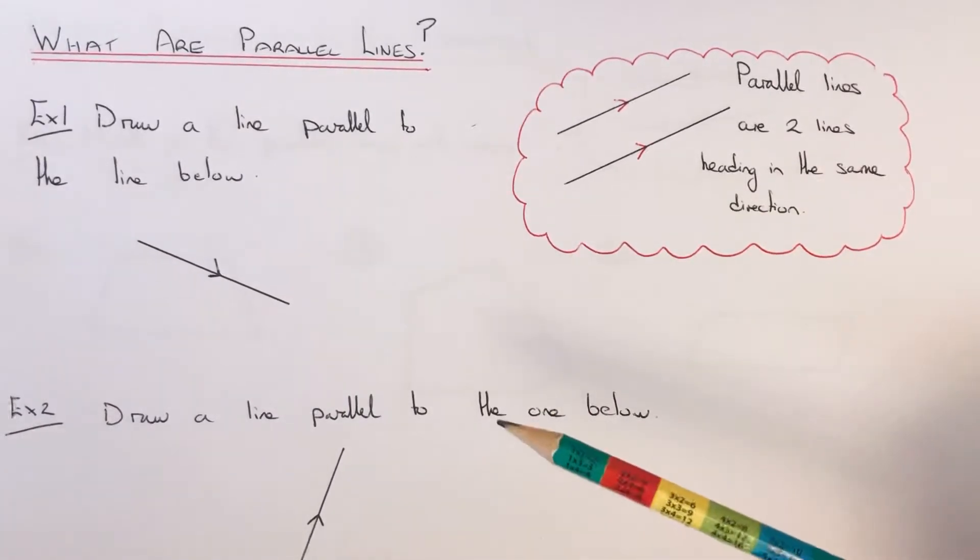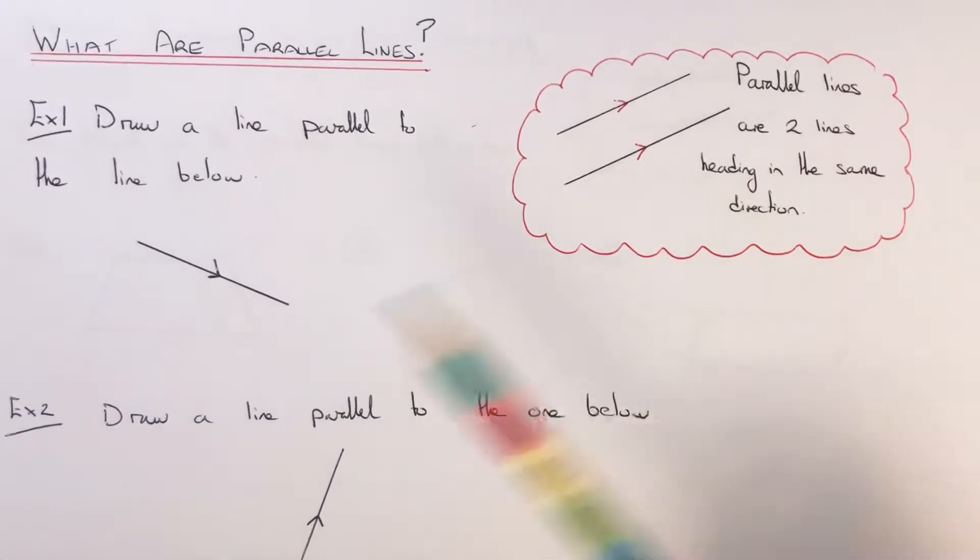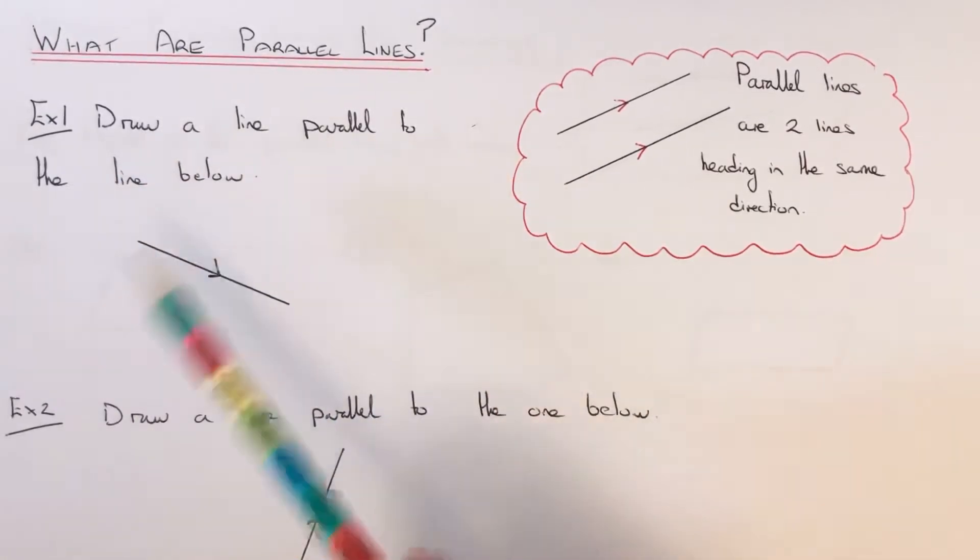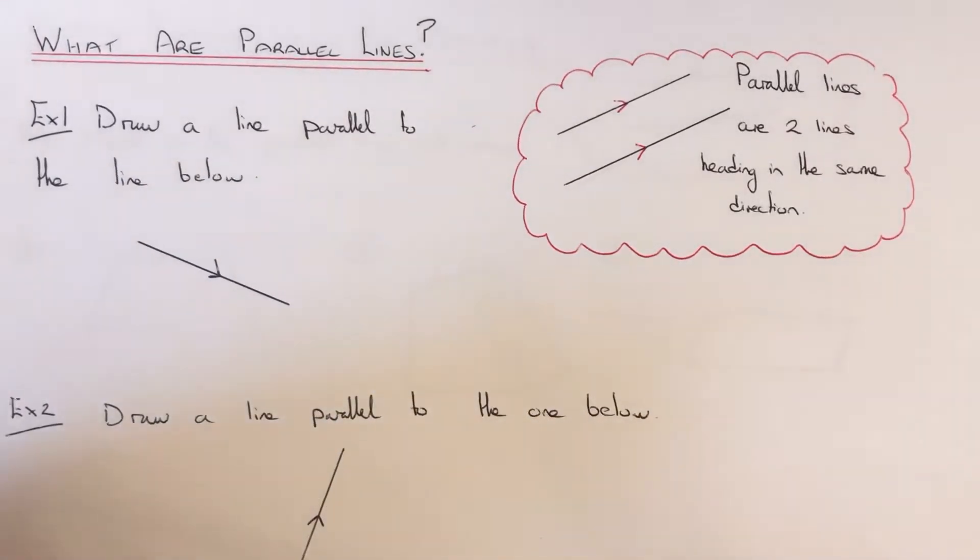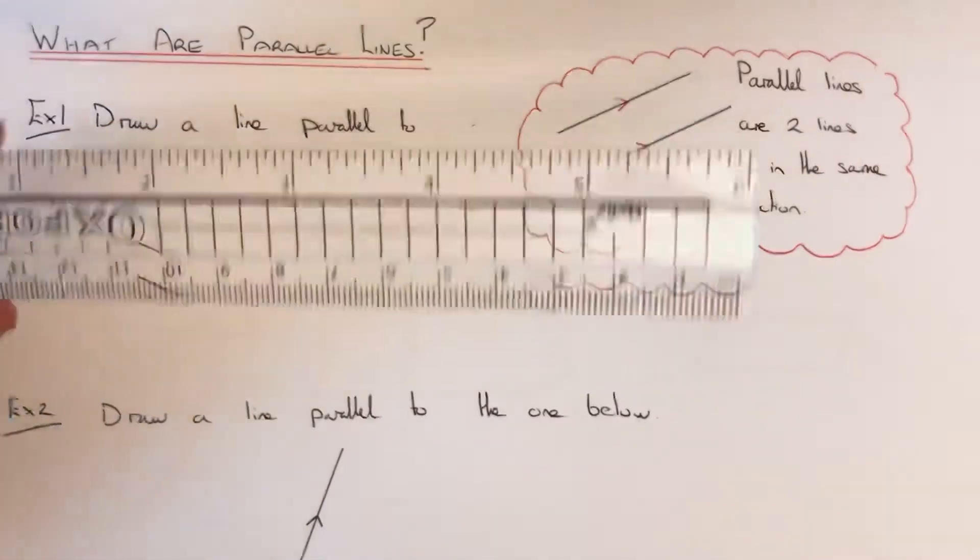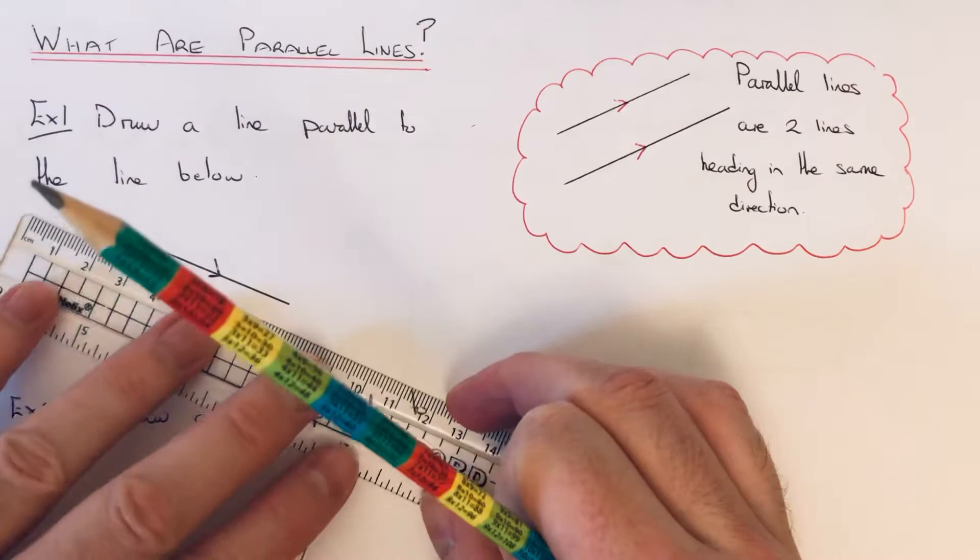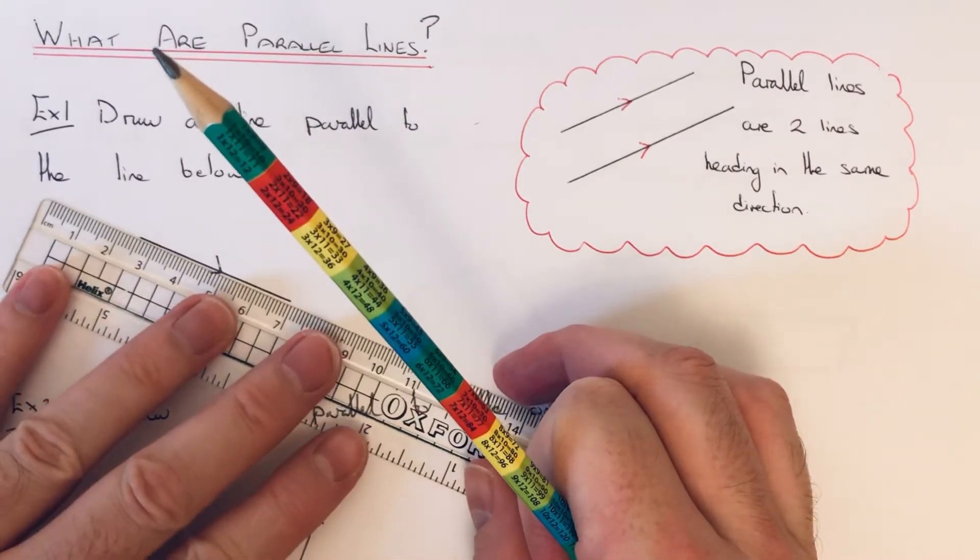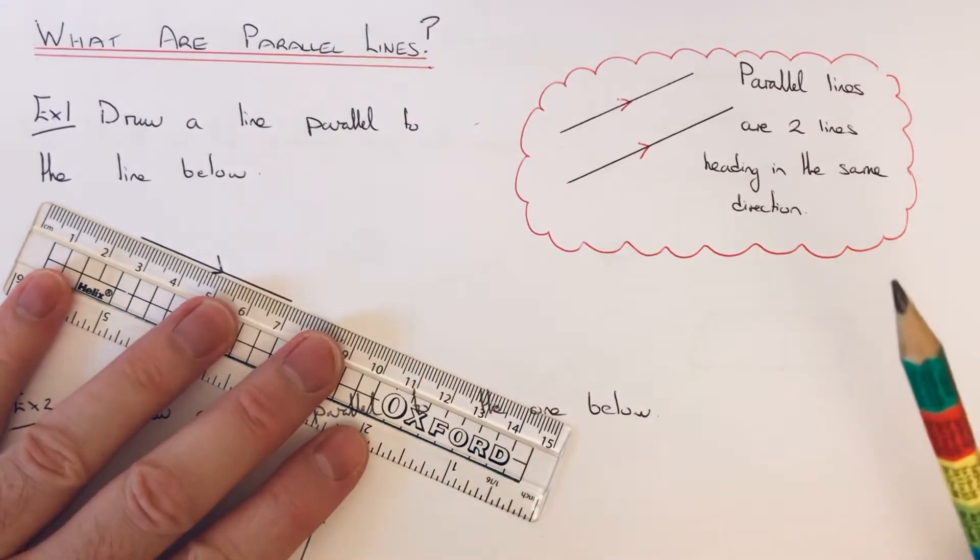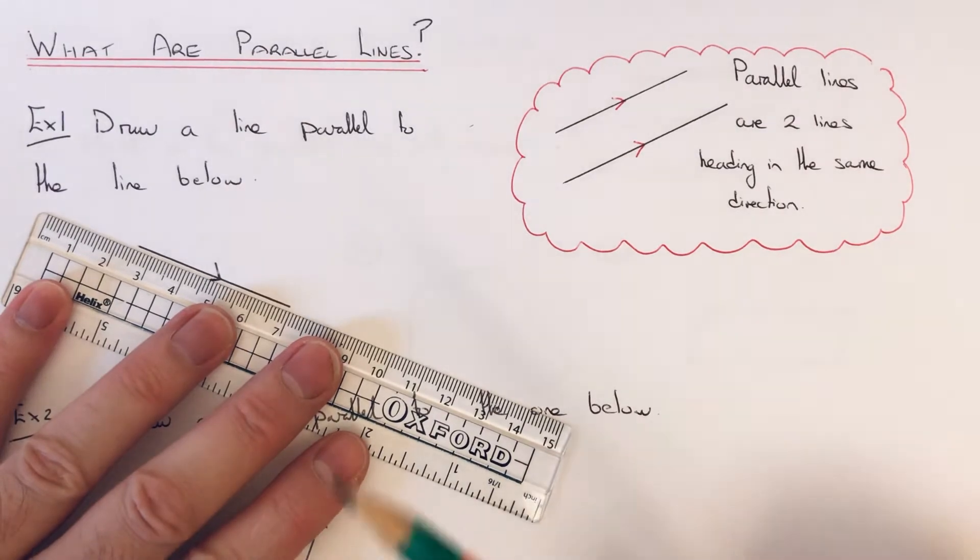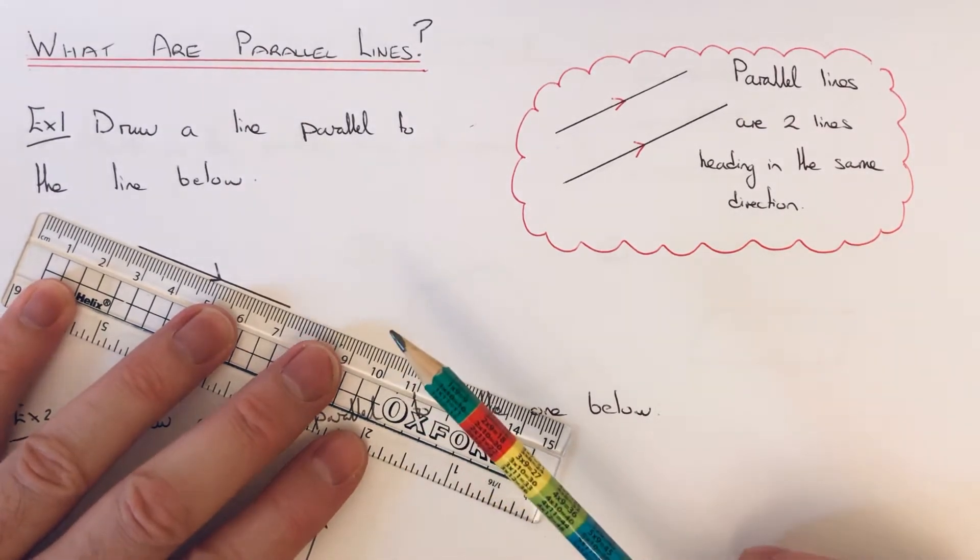So let's have a look at the two examples here. We've got to draw a line parallel to the line below. The best way to do this is get yourself a clear ruler and put your ruler against the line that you have. We can do our parallel line either above the line or below the line, it doesn't really matter.